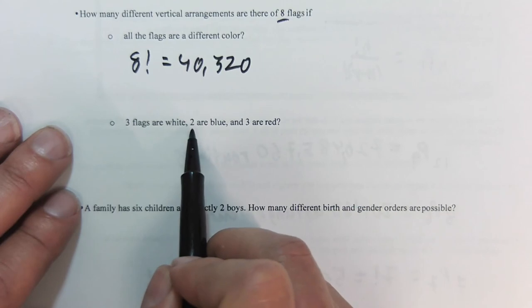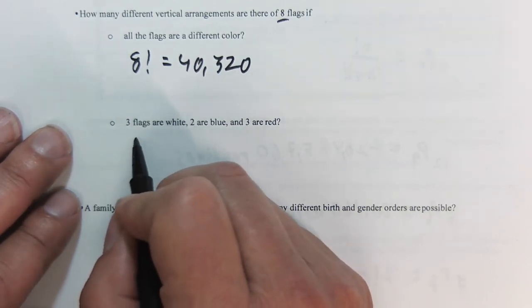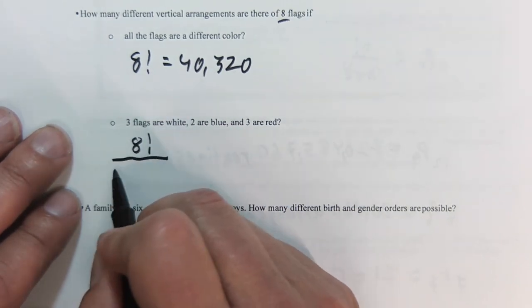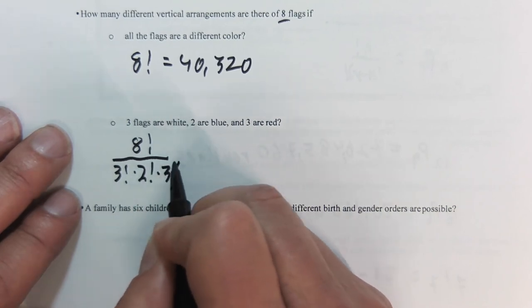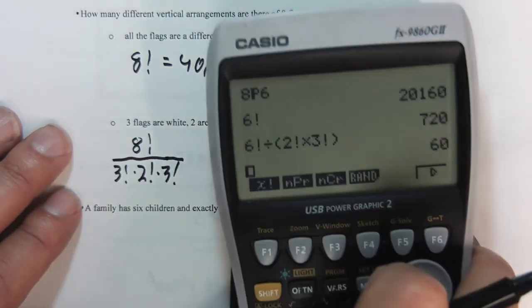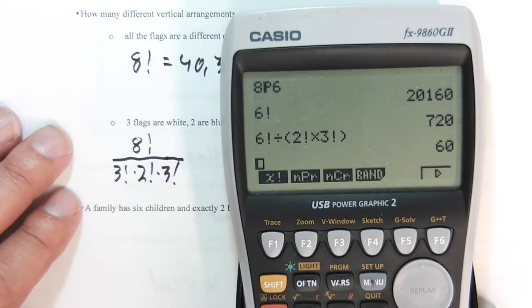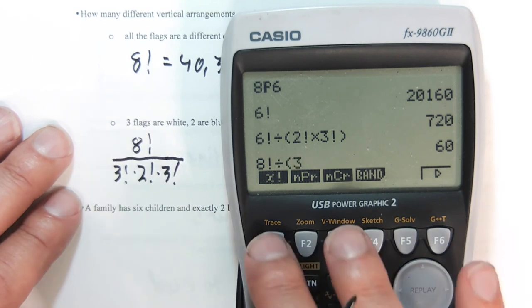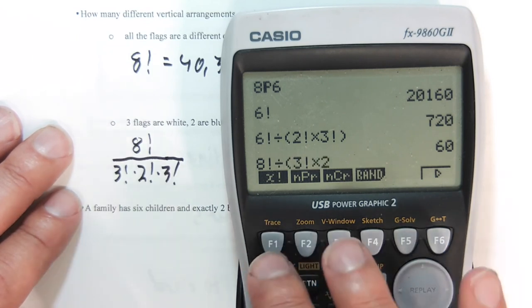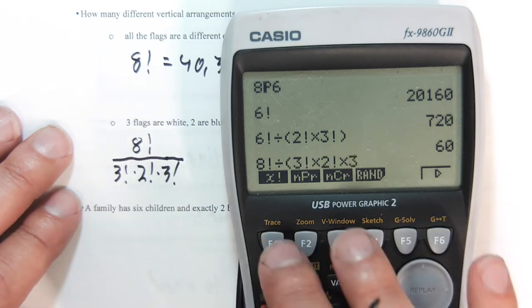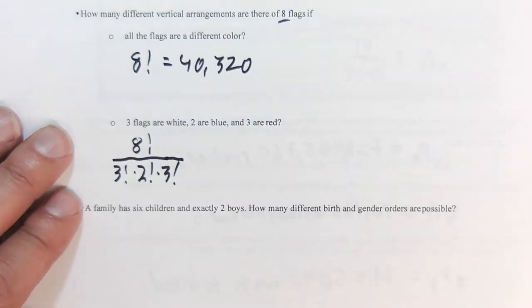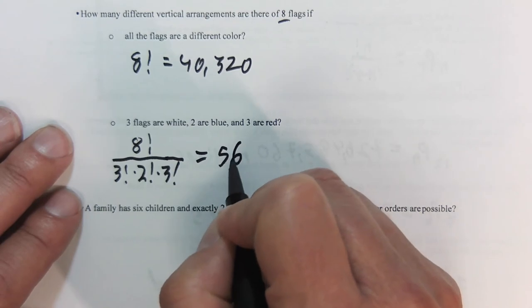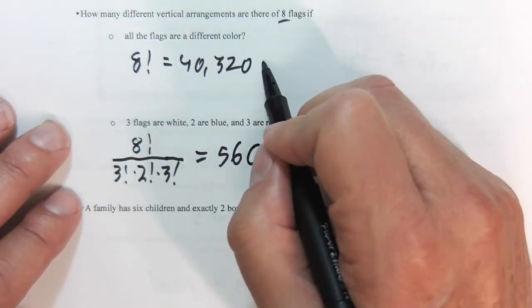However, now these flags have repeats. So that's going to be 8 factorial over 3 factorial times 2 factorial times 3 factorial. And again, I'm going to use my parentheses as I do this. So 8 factorial divided by 3 factorial times 2 factorial times 3 factorial. Close. Giving me 560 arrangements.